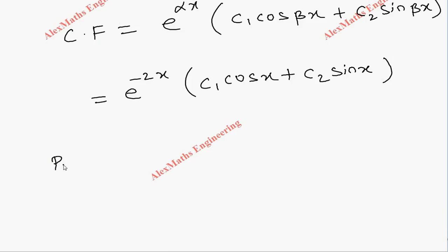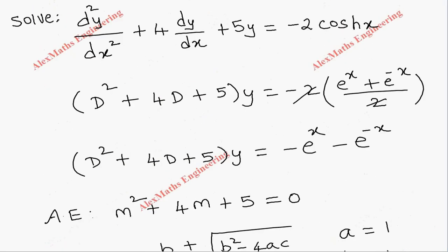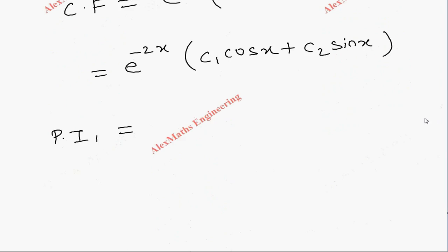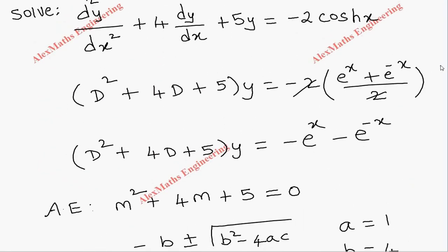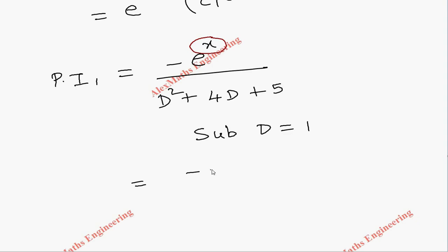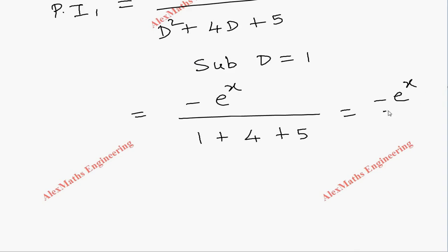Next we write the particular integrals. On the right-hand side we have two terms. For Particular Integral 1, we take -e^x divided by (D² + 4D + 5). We substitute d = 1 (the coefficient of x in the exponent). This gives -e^x / (1² + 4·1 + 5) = -e^x / (1 + 4 + 5) = -e^x / 10.